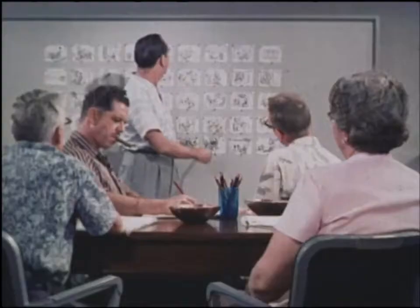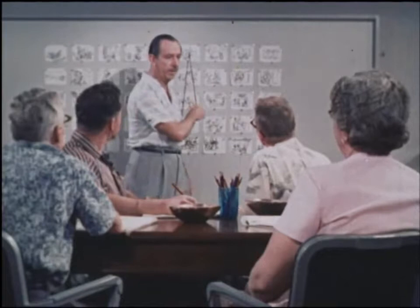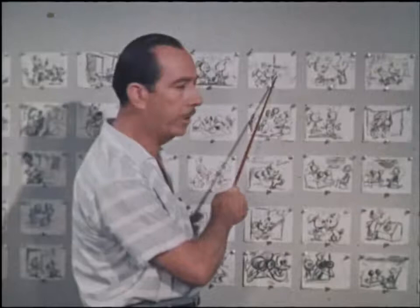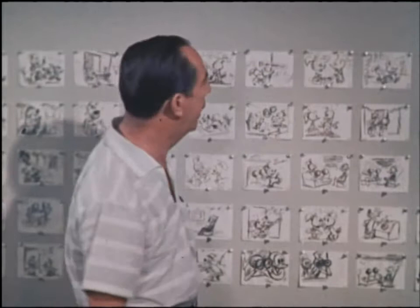After the director has timed his picture, he goes over the storyboard with the animators who will work on it. He explains the story in detail and the personality of the characters. Then he gives each animator a portion of the story to animate.